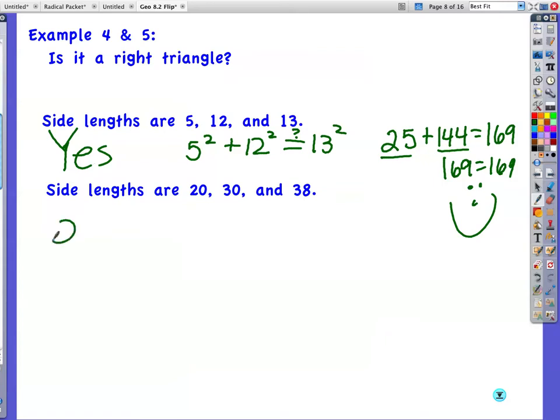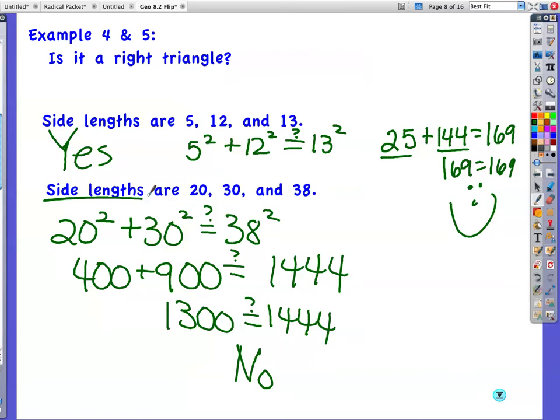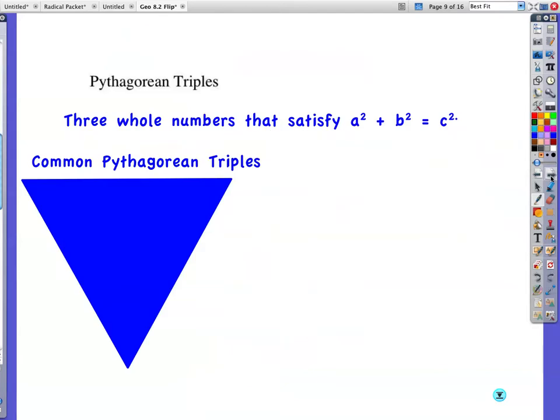Side lengths are 20, 30, and 38, not 80. Silly. 20 squared plus 30 squared. Does that equal 38 squared? 20 squared is 400. 30 squared is 900. And let's see. 38 squared is 1,444. So does 1,300 equal 1,444? No. So is this triangle with side lengths 20, 30, and 38, is that a right triangle? No. Because the Pythagorean theorem does not apply. Or we do not get our a squared plus b squared equals c squared. So we don't have a right triangle.